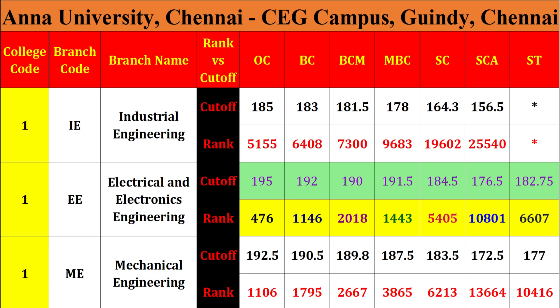Mechanical Engineering: OC 192.5. Last year first to first: 200 out of 200. Last cut-off OC 192.5, rank 1106. BC 190.5, rank 1795. ST student 177, general rank 10416.